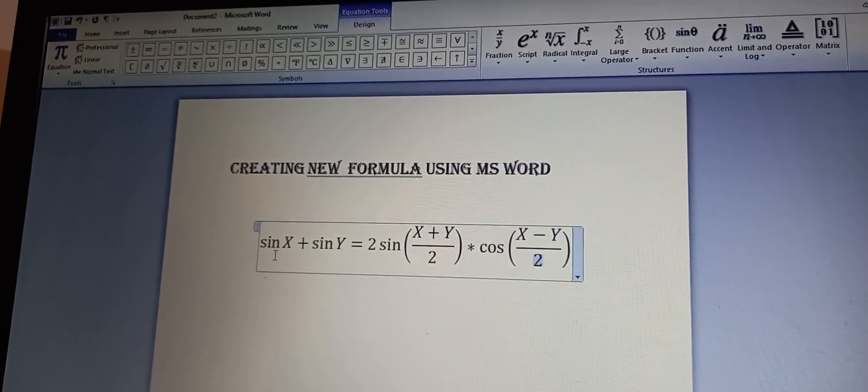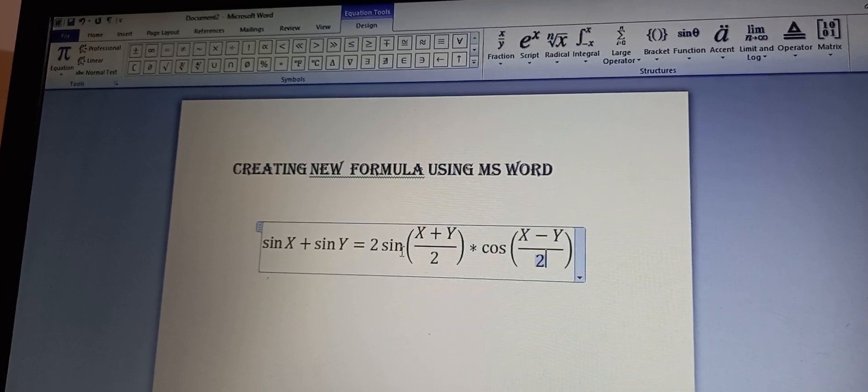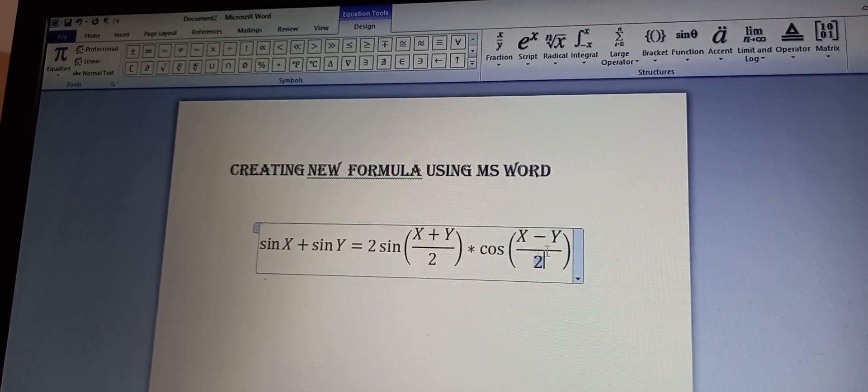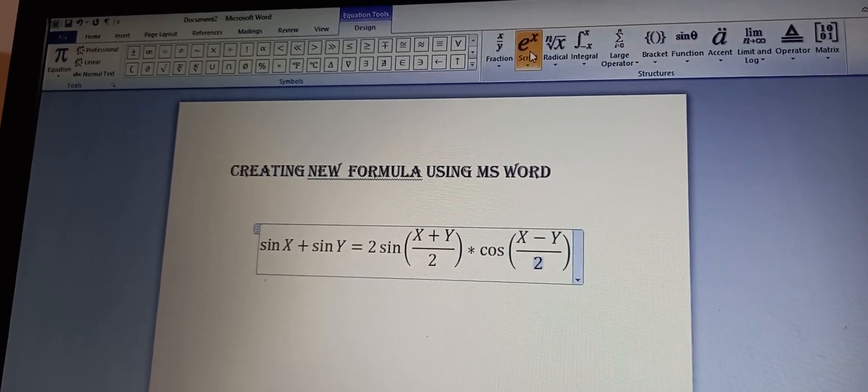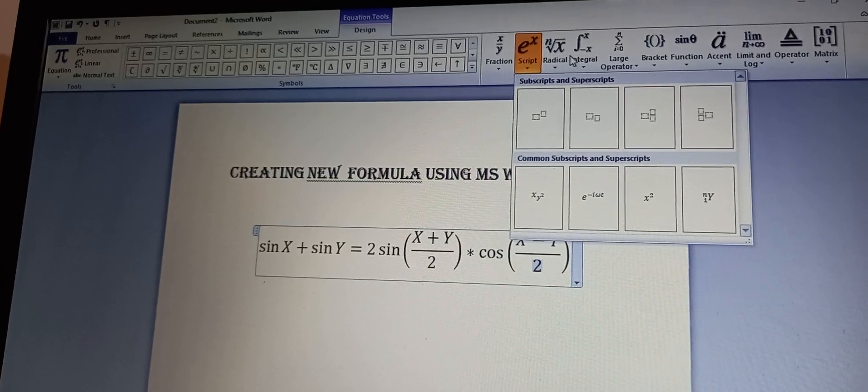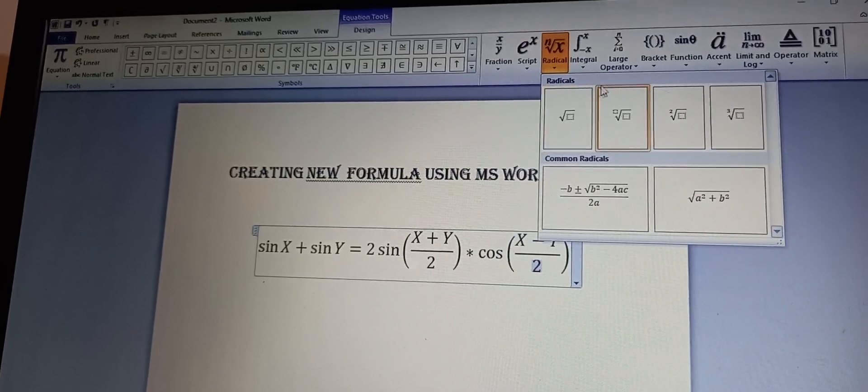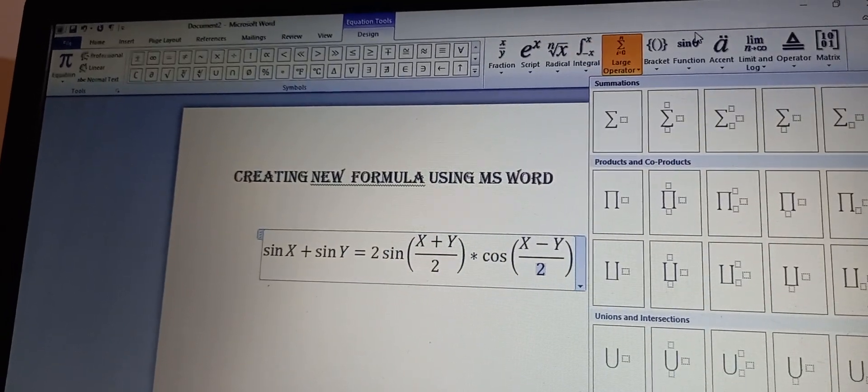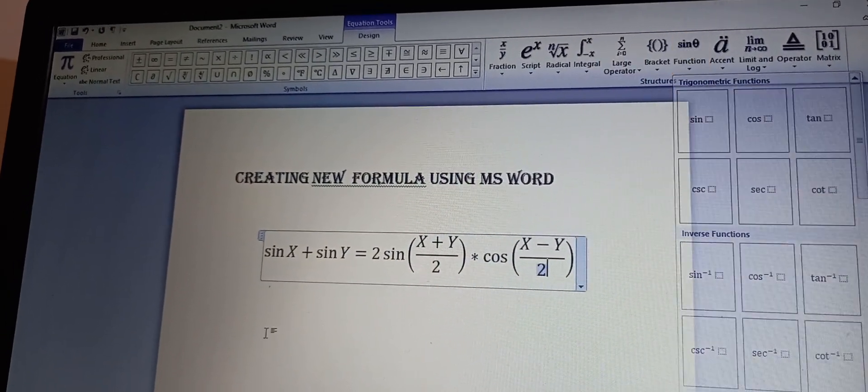Here is the formula: sine x plus sine y equals 2 sine (x+y)/2 into cos (x-y)/2. You can also insert e^x and other expressions. Thank you.